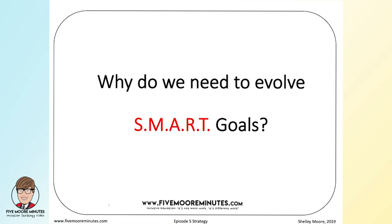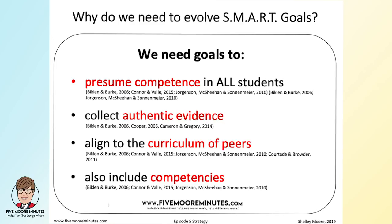So why do SMART goals need to change? These are the four big ideas we presented in the video. SMART goals historically in special education have aligned with the problematic assumption that if you can't see learning, then it must not be happening — which we know isn't true. If we're really going to look at IEPs for students today, based on what we know, we need goals in individual education plans that don't assume incompetence, but presume competence in all of our kids.